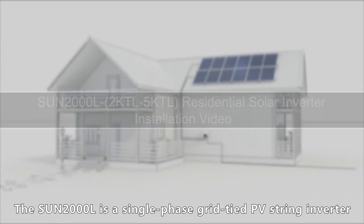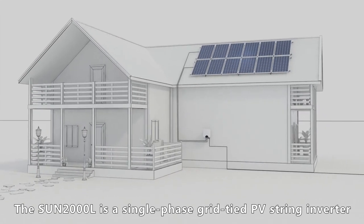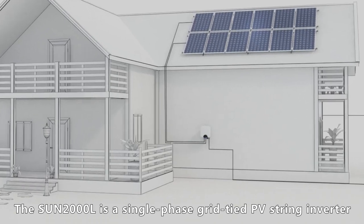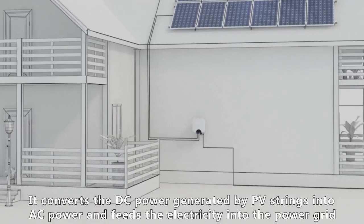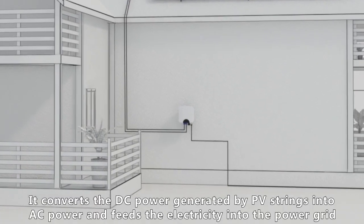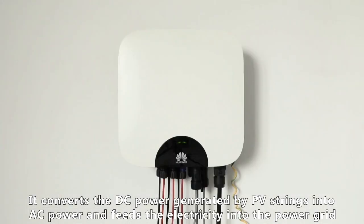The Sun 2000L is a single-phase grid-tied PV string inverter. It converts the DC power generated by PV strings into AC power and feeds the electricity into the power grid.